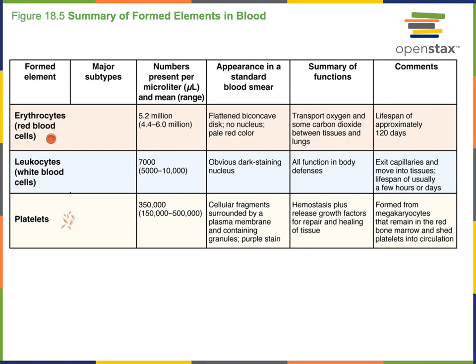The platelets, also known as thrombocytes, are small cellular fragments produced by cells found in the red bone marrow. Platelets are produced from a cell called a megakaryocyte, which breaks off small fragments that exit the bone marrow and move into the blood. Platelets stick together forming a platelet plug that can block a blood vessel, helping blood clotting and maintaining hemostasis — the mechanism that stops bleeding.